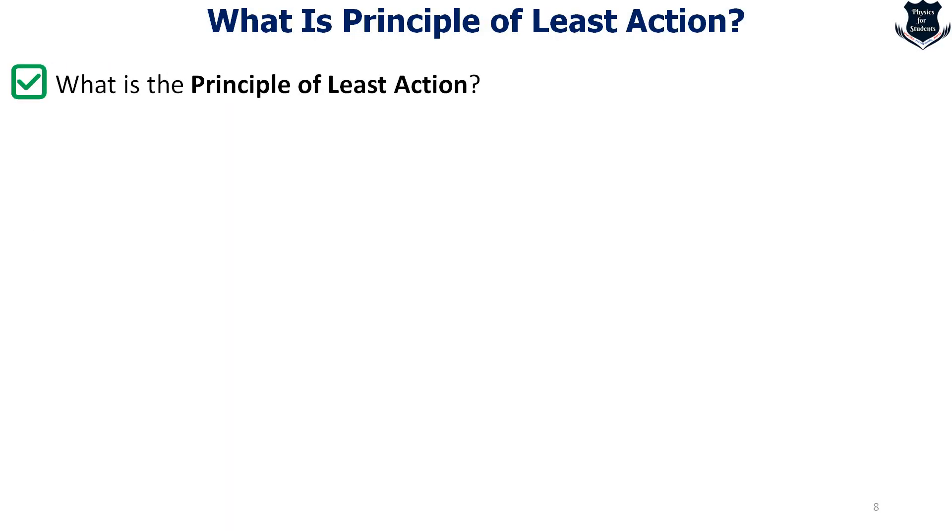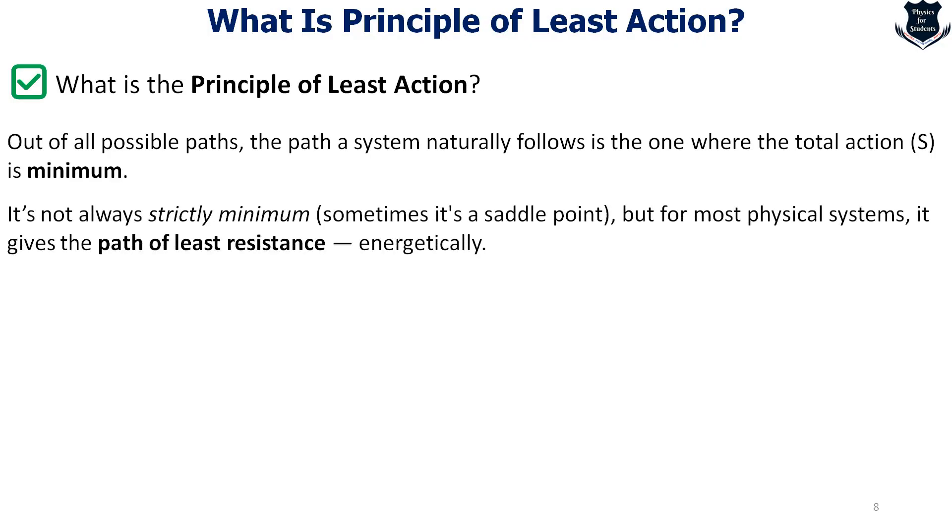From there we come to what is called the principle of least action. The principle of least action is basically out of all the possible paths, the path the system naturally follows is the one where the total action is minimal. Why do we call it a principle? Because in science a principle is a fundamental rule, something so general and deep that it applies to a wide range of systems. The principle of least action is not just a trick for solving equations.